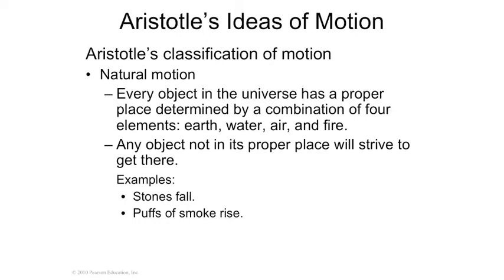When he wrote on motion, he had this concept that everything had a proper motion. For instance, fire would always go up — that's just what fire did. Rocks would always fall down — that's just what rocks did. So there was a motion inherent in the substance. According to the Greeks, there were four substances: earth, water, air, and fire.